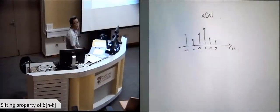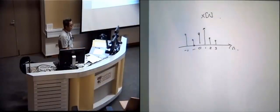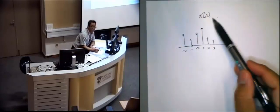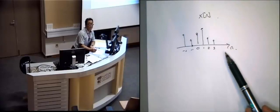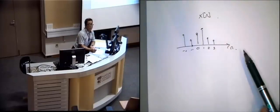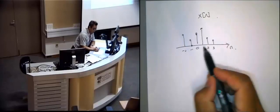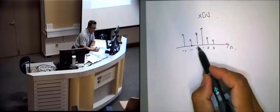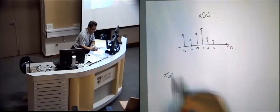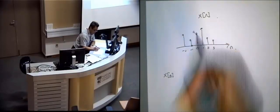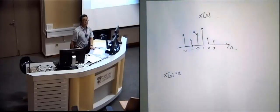If I have a sequence x of n that looks like this, for example, and I draw pictorially all these representation, these numbers representing x of n across the x-axis, and I'm interested in the value at n equals to zero, what do I do? I can write x of zero, and then I'll get the value maybe a. That's one way I can do it.